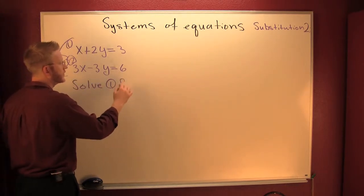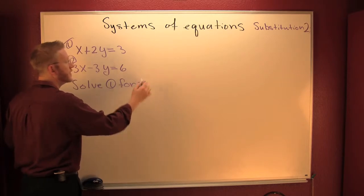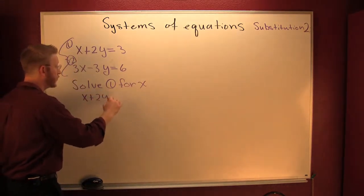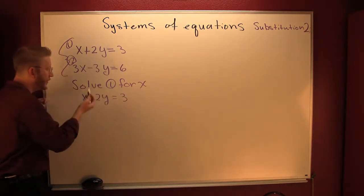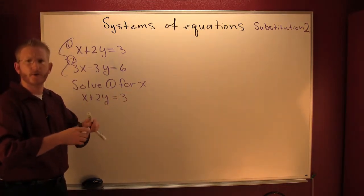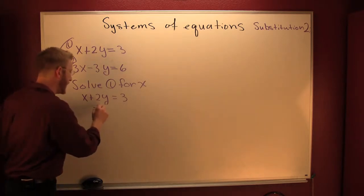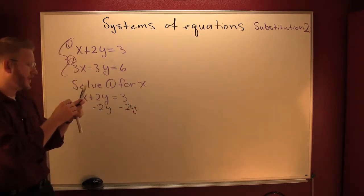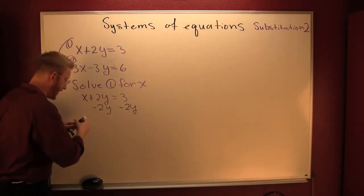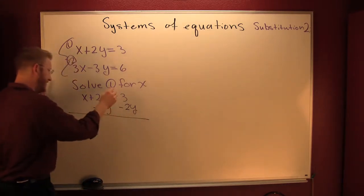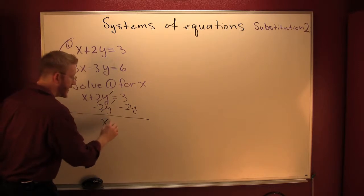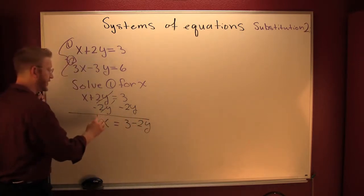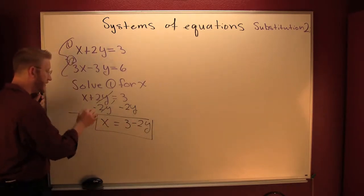Solve thing one for X. So the first thing I'll do is I'll write thing one. X plus two Y is three. How are we gonna isolate X? How are we gonna get X by himself? We're gonna subtract off two Y from each side. Minus two Y. Minus two Y. Left on the left side, you have X. Back to the right, X is three minus two Y. I'm gonna go ahead and I'm gonna call that three.